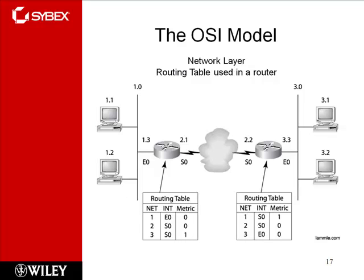The network layer routing table — you can tell the router either the next hop address or which interface to go out of. If it goes out of interface S0/2.1, it can only go to S0/2.2. If we go out of E0 on the 1.3 network, it can only go to the 1.0 network. When doing route tables, you can specify either the exit interface or the next hop address — he likes to do both, just to be doubly secure.